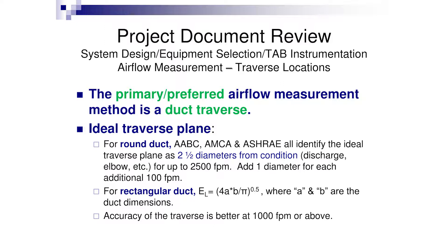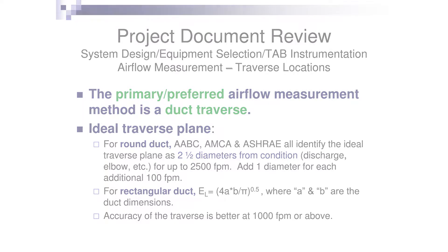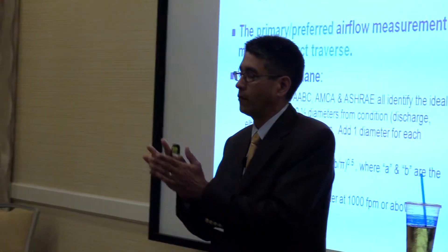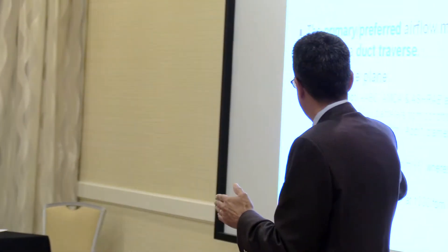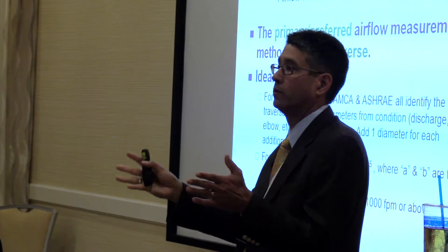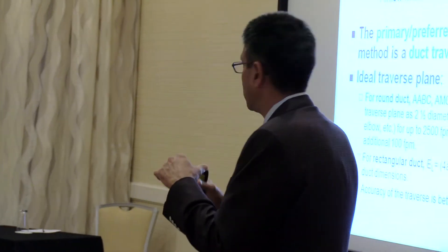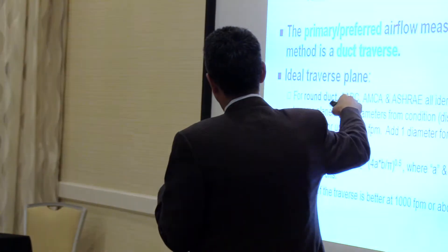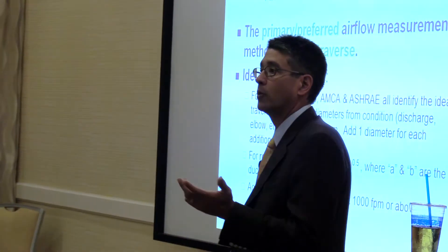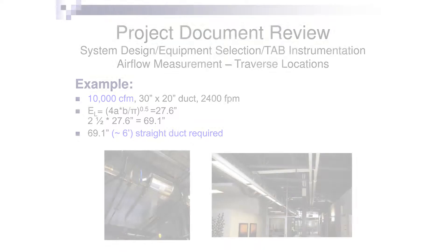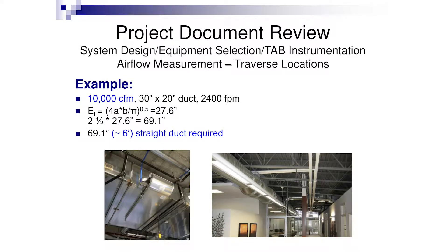Keep in mind the primary preferred method for air flow measurement is a duct traverse — that's our most accurate means of providing an airflow measurement. You want 2.5 diameters from any condition for an ideal traverse plane. For rectangular duct, use your equation to get the equivalent length; for round duct, it's just the round duct diameter. The velocity should be better than 1,000 feet per minute for more accurate readings.